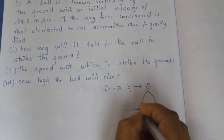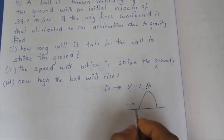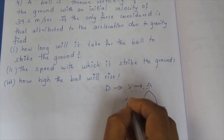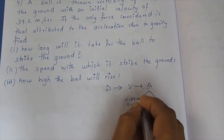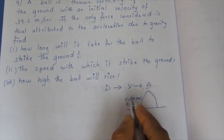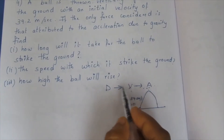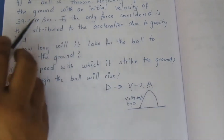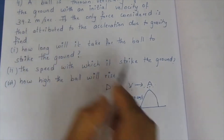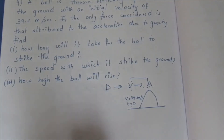At the starting point, time is equal to 0. That means the initial velocity is 39.2 meters per second. That is at T equals 0. If we look at the relationship between distance, velocity, and acceleration, velocity is the differentiation of distance.